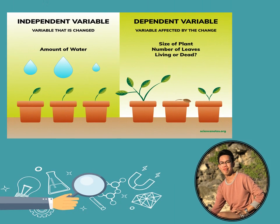In the plant example, the independent variable is what you change — for instance, the amount of water you give to three plants. The dependent variable is the outcome — the result based on how much water you added. The watering is the independent variable because you are manipulating it, and the growth or height of the plants is the dependent variable, which is the outcome or result.